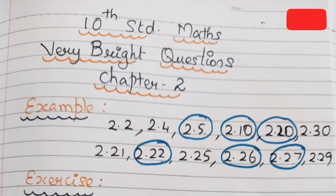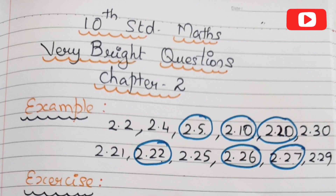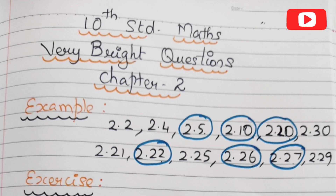For example: 2.2, 2.4, 2.5, 2.10, 2.20, 2.21, 2.22, 2.25, 2.26, 2.27, 2.29, and 2.30.